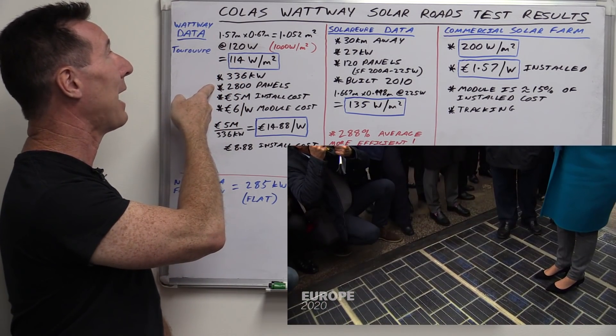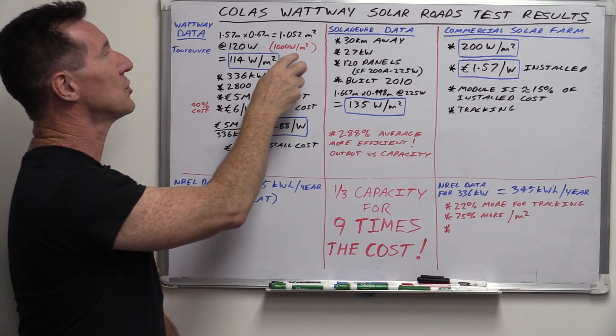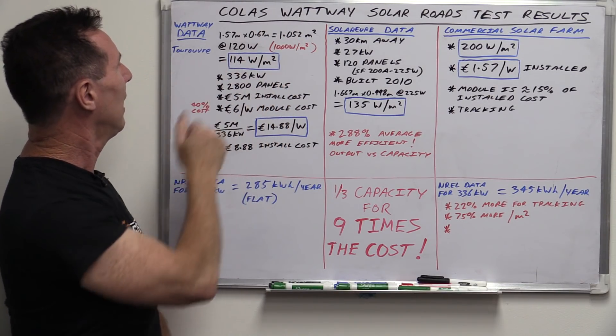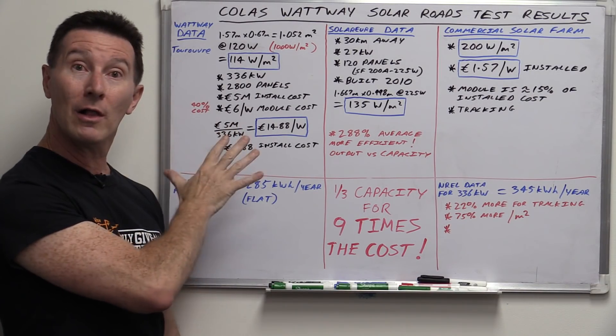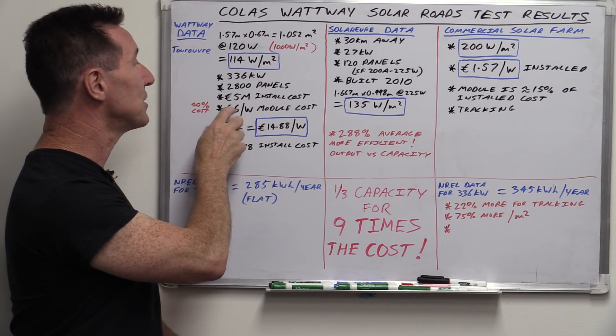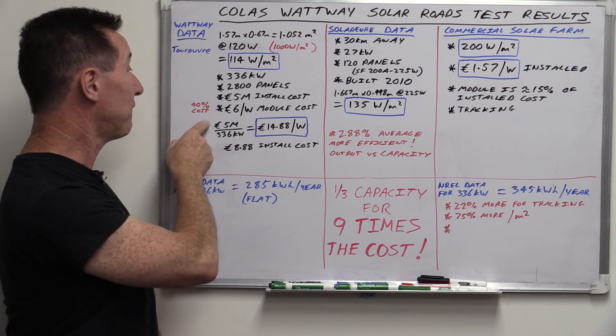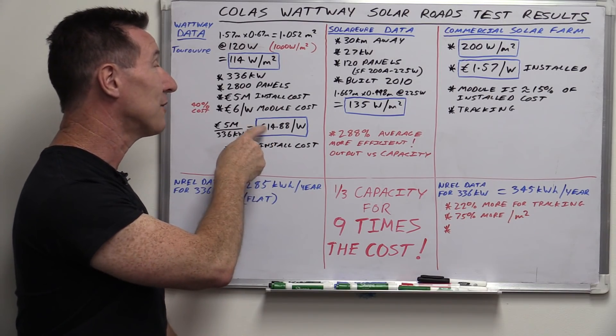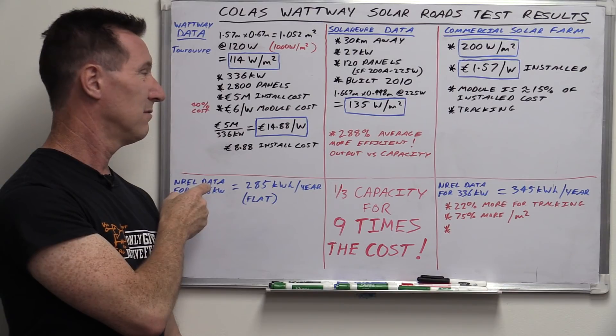assuming that it's a nominal solar irradiance of 1,000 watts per square meter regular test conditions. It's $5 million installation cost. Colas Wattway have said that it costs about 6 euros per watt module manufacturing cost. Divide 5 million euros by 336 kilowatts installation size. It's 14.88 euros per watt. Is that reasonable?